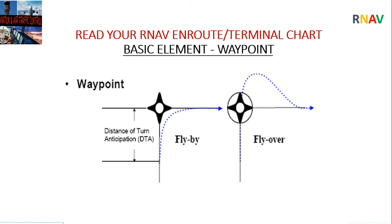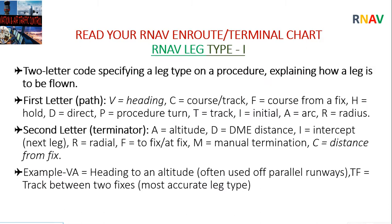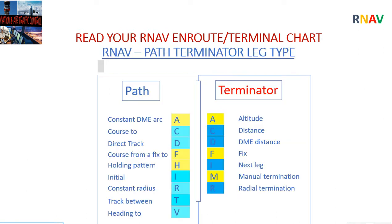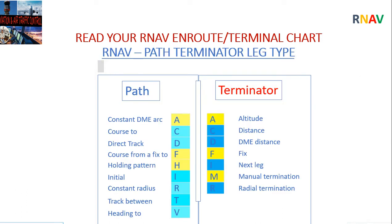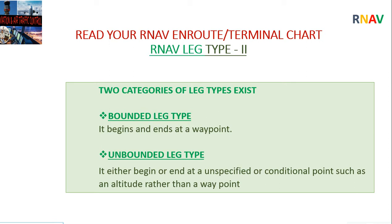Now we will read en-route and terminal charts, covering the following elements: waypoints (flyby or flyover) and area navigation leg types. Leg types are described with two-letter codes — the first letter specifies the path: V equals heading, C equals course, F equals course from a fix, H equals hold, D equals direct, T equals track. The second letter specifies the terminator — where the leg should end: A equals altitude, D equals DME distance. Examples: VA equals heading to an altitude; TF equals track between two fixes.